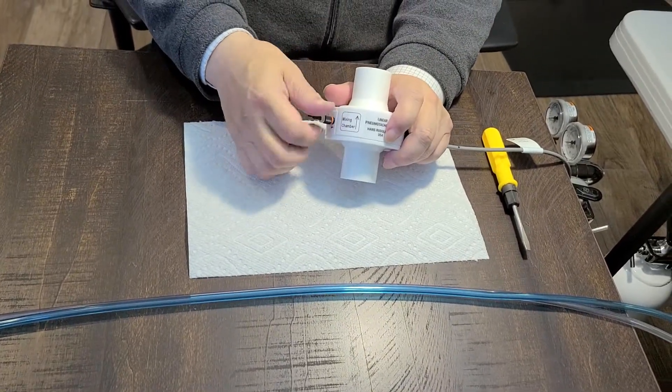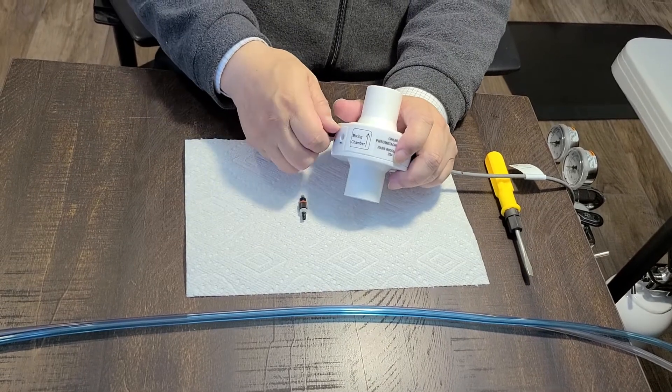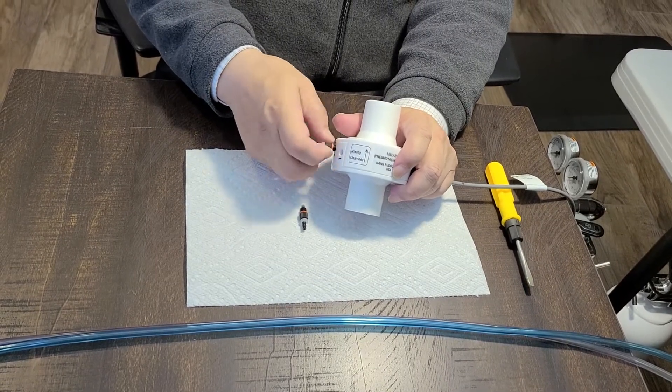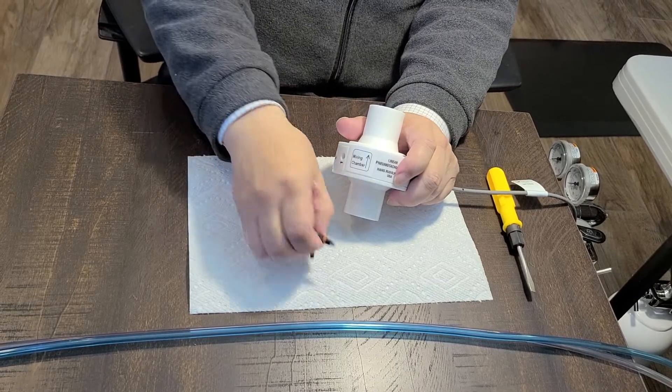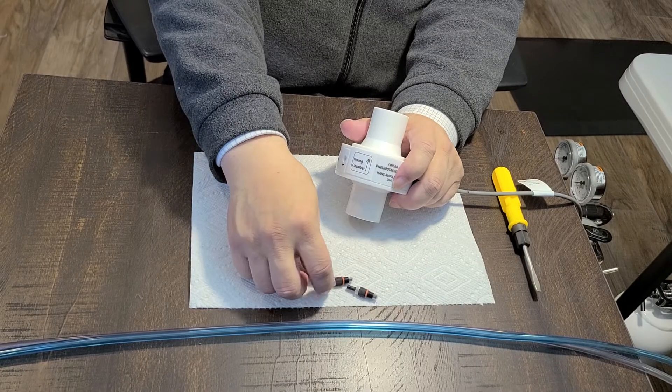Second step, unscrew the black pressure connector. They are the same if they are in good shape.